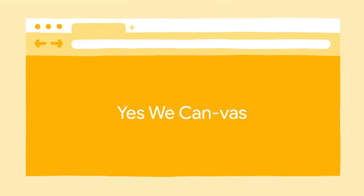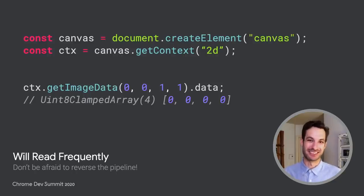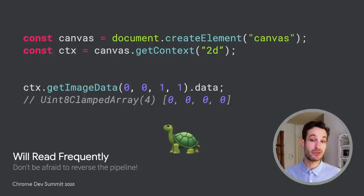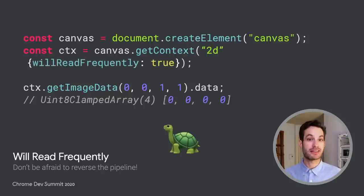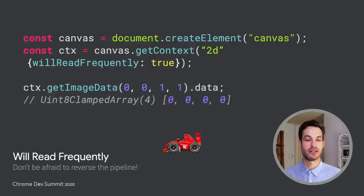Last part is performance. There's always room for improvement with performance. Performance has been holding developers back from using Canvas for specific use cases. But with the new API, yes we Canvas. 'Will read frequently' is an attribute we've added for get image data, which is how you read pixel data back from the canvas. It can be very slow, but it's really useful for generative effects. The new API gives developers a way of explicitly marking a canvas for readback, which allows us to optimize things under the hood and keep canvas fast for a larger variety of use cases. It's been around in Firefox for a while already, but we're finally making it part of the official spec.